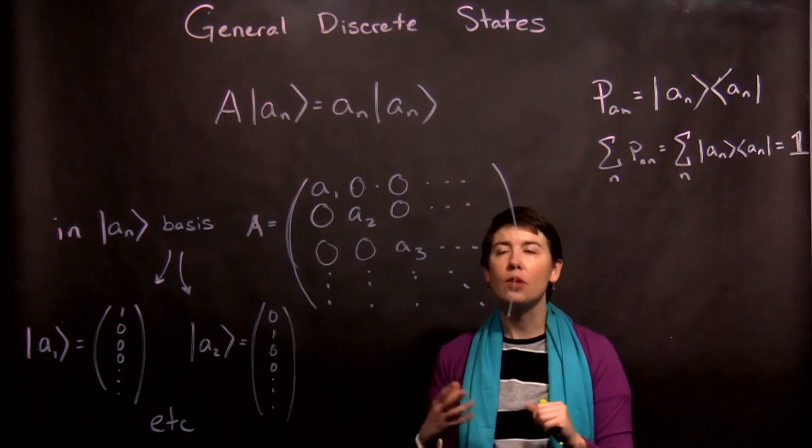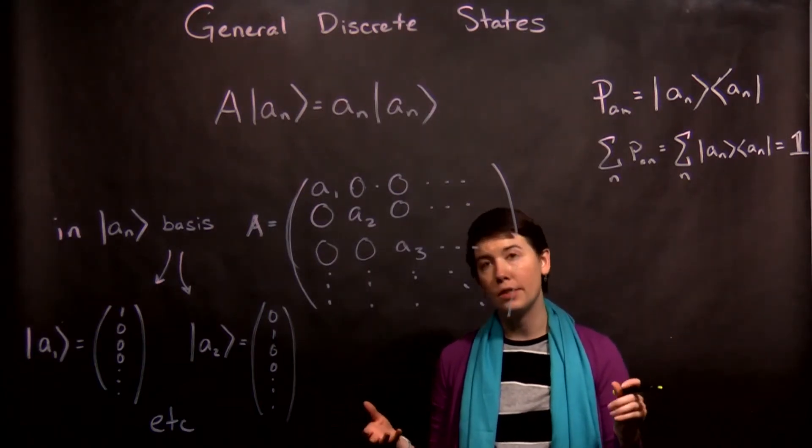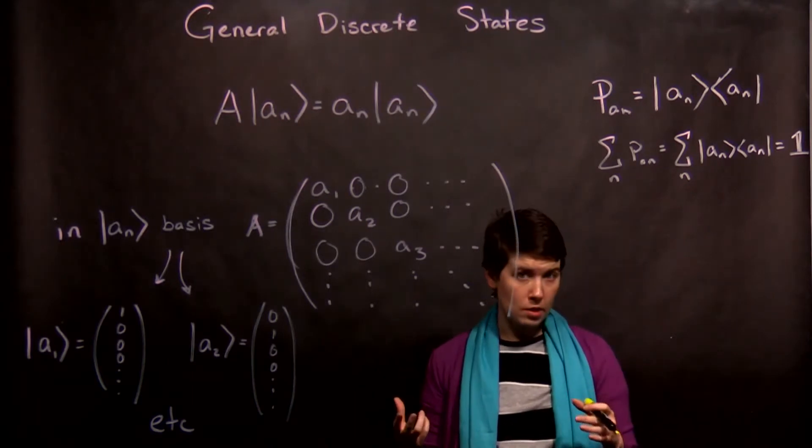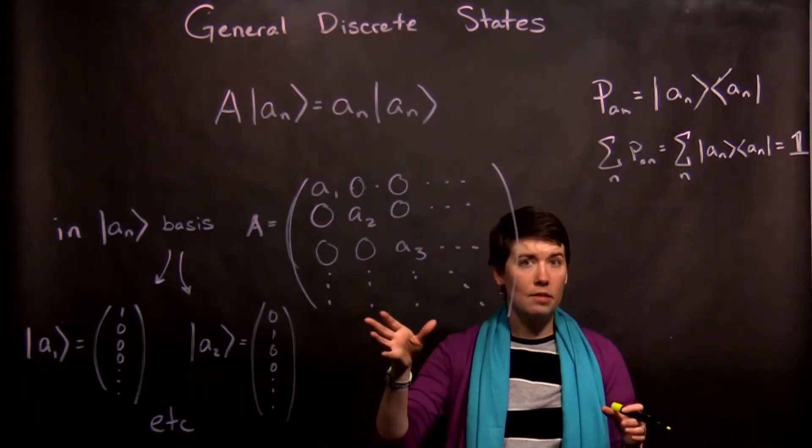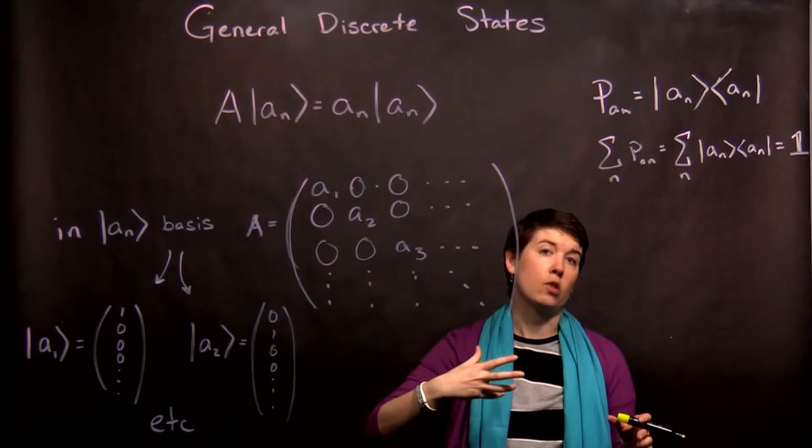Reaching the end of chapter 2, let's summarize a little bit of what we've learned about expressing our discrete states in our ket state, our ket notation, and our matrix notation.